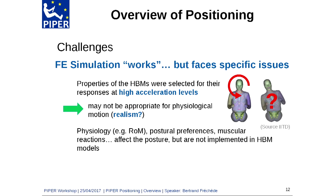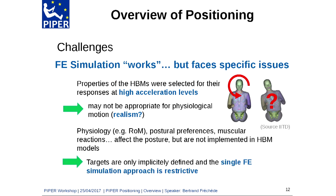This is related to the fact that physiology — such as range of motion, postural preferences, and muscular reactions — does affect posture, but these are not implemented in HBM models. So the targets you define are generally mostly implicit, and the single FE simulation approach is quite restrictive.